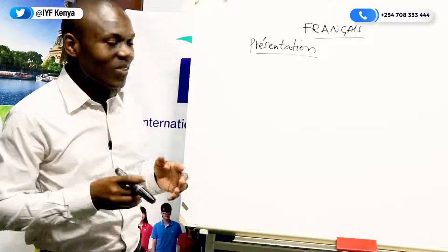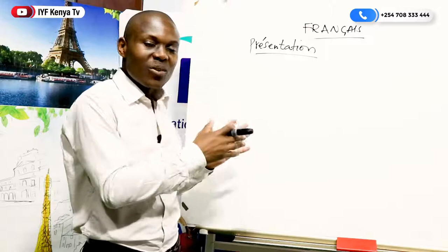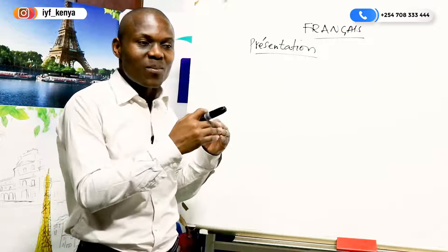And how can you introduce yourself in French? In our previous lesson we talked about two verbs: verb to be and verb to have. For verb to be we have: je suis, tu es, il est, elle est, nous sommes, vous êtes, ils sont, elles sont. And je suis means I am.